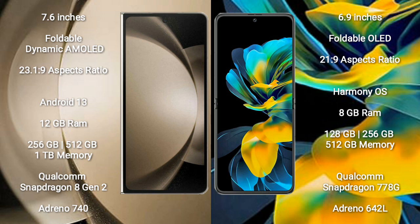Samsung Galaxy Z Fold 5 comes with 12GB RAM and 256GB, 512GB, or 1TB internal storage options. It is powered by a Qualcomm Snapdragon 8 Gen 2 processor with Adreno 740 GPU.